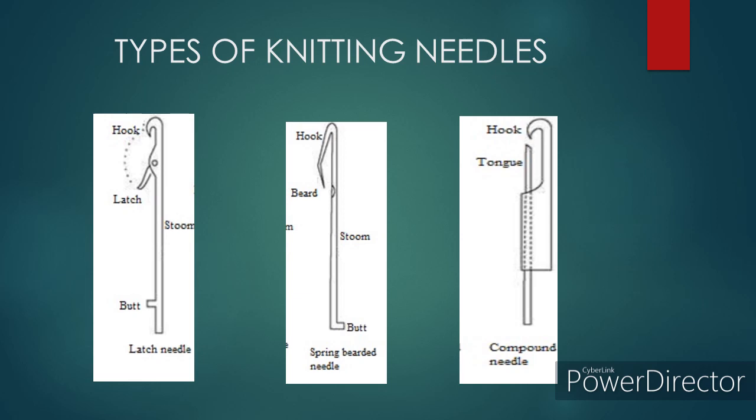The three types of knitting needles available commercially are: number one, the latch needle; number two, the spring beard needle; and number three, the compound needle. Of the three, the latch needle is the most commonly used knitting needle in weft knitting. The spring beard needle is used in warp knitting. Compound needles are very rarely used in the weft knitting process.